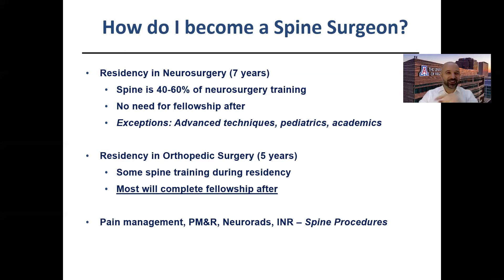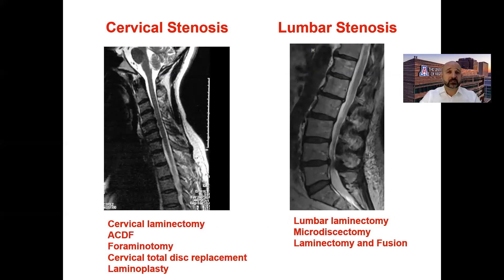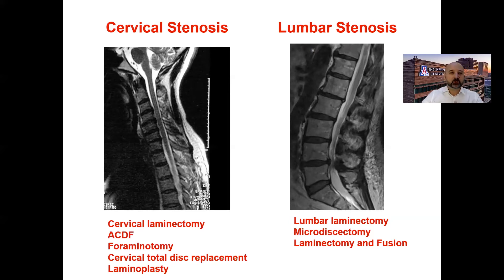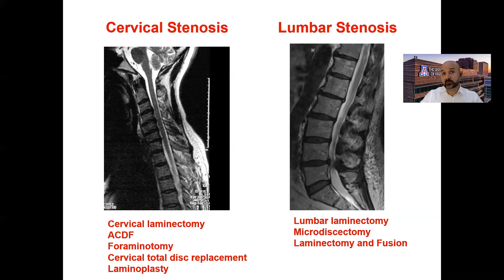That's how you become a spine surgeon, and I encourage all medical students to seriously consider it — it's a phenomenal subspecialty. The most common things we see as spine surgeons are degenerative spine pathologies: cervical stenosis, lumbar stenosis, and lumbar disc herniations. If you've rotated on neurosurgical services or spent time with either an orthopedic spine surgeon or neurosurgeon, you've definitely seen this — it's the bread and butter of what we do.